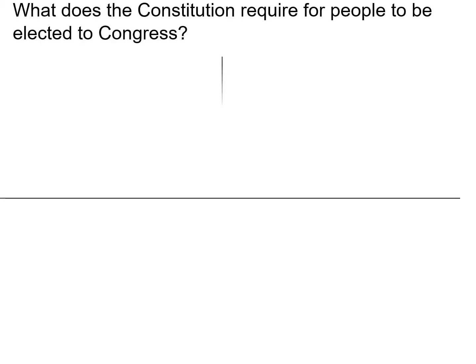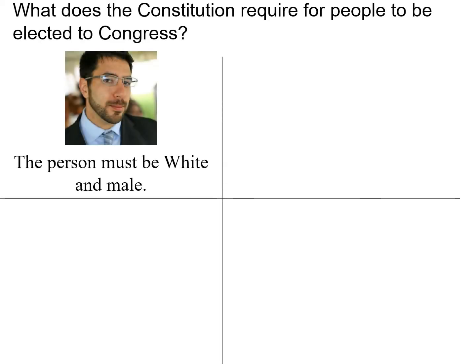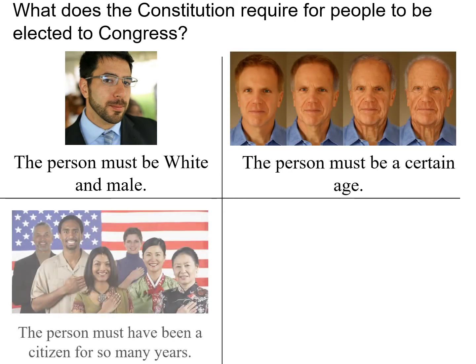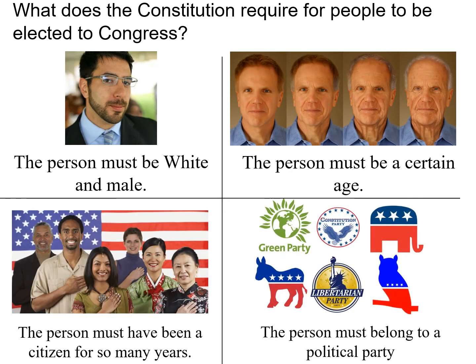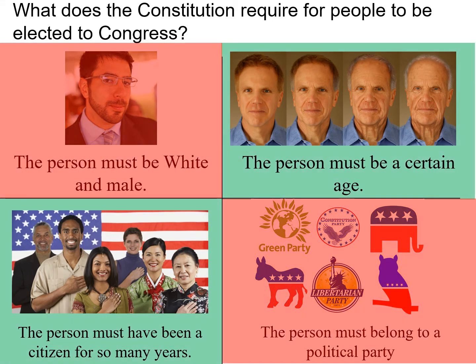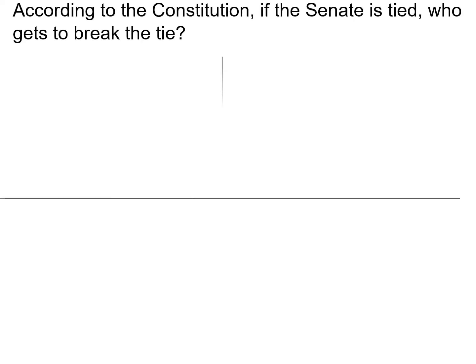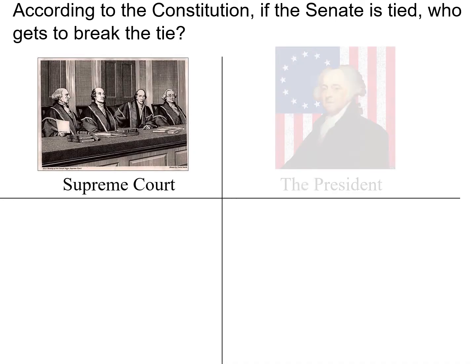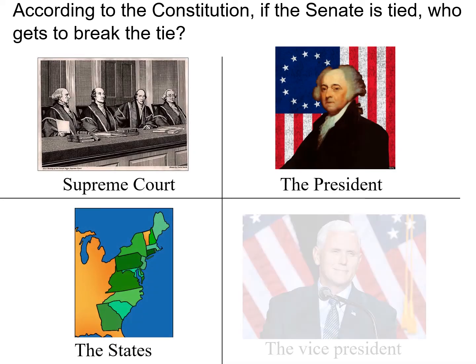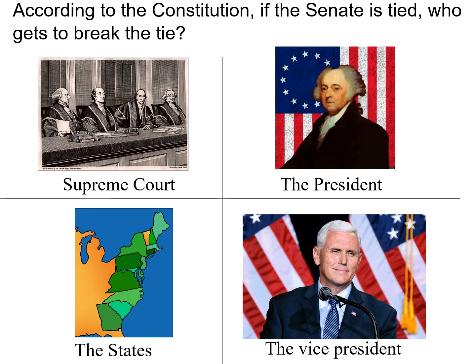What does the Constitution require for people to be elected to Congress? The person must be a certain age and have been a citizen for so many years. According to the Constitution, if the Senate is tied, who gets to break the tie? The Vice President.